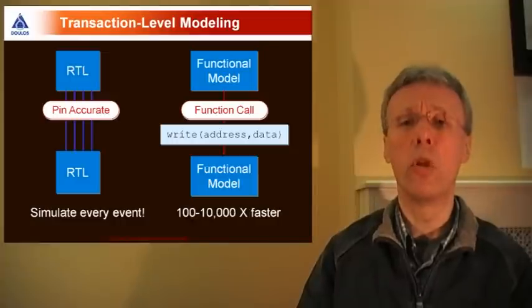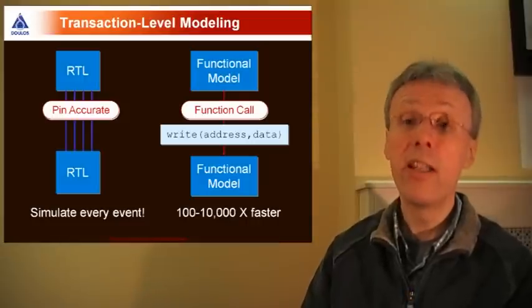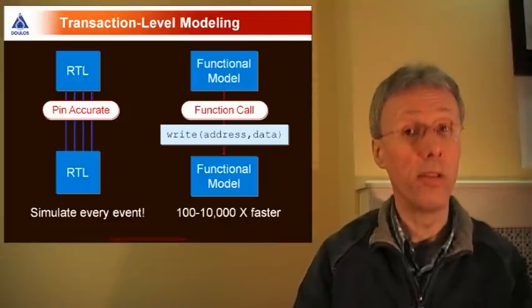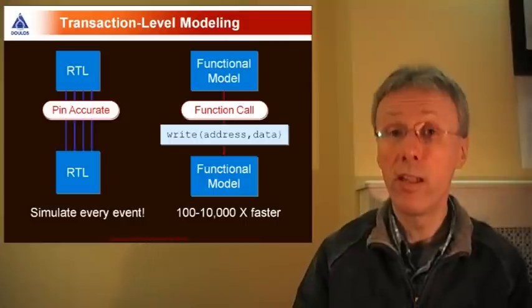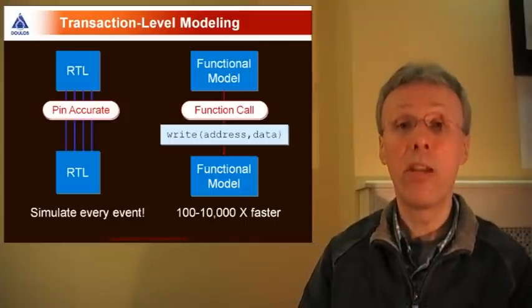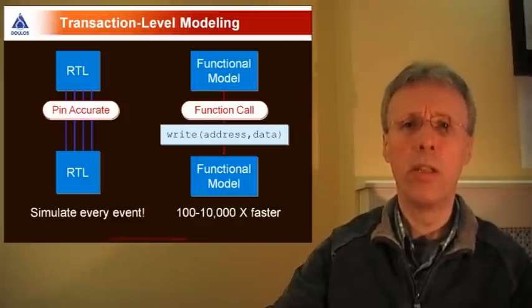Contrast that with a transaction level model. Communication between blocks in a transaction level model is achieved using simple function calls. And replacing lots of pin wiggling with single function calls gives a dramatic speed up in simulation. Somewhere between 100x and 10,000x is typical and that's worth having.